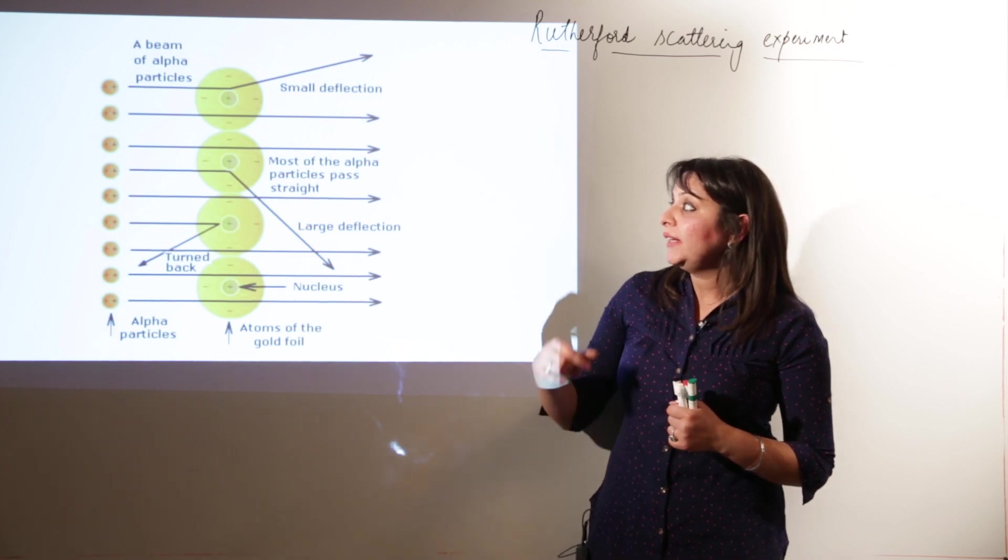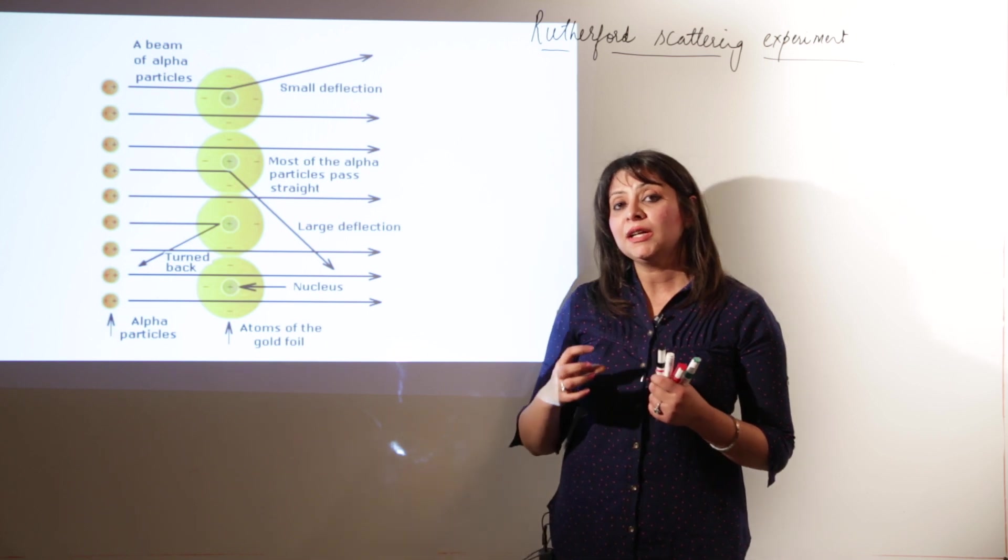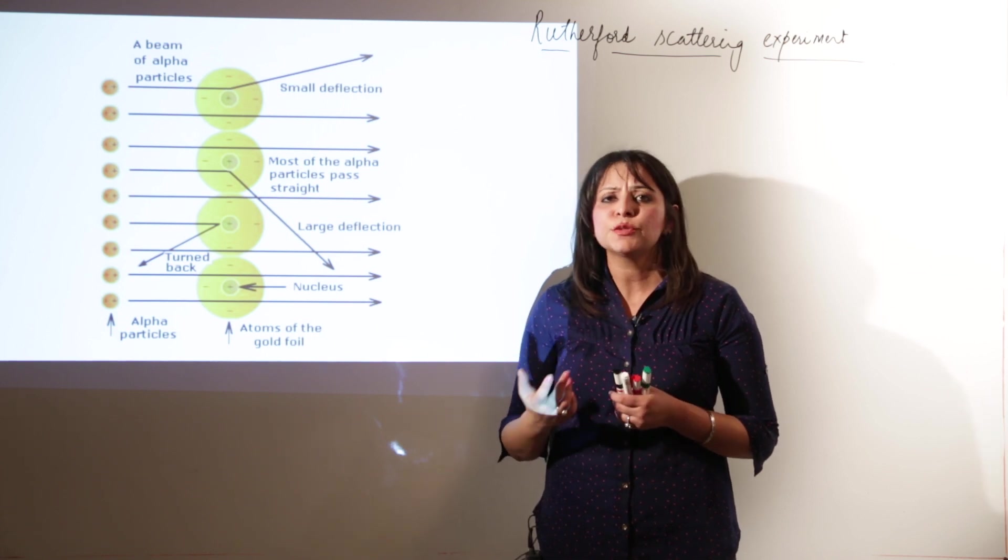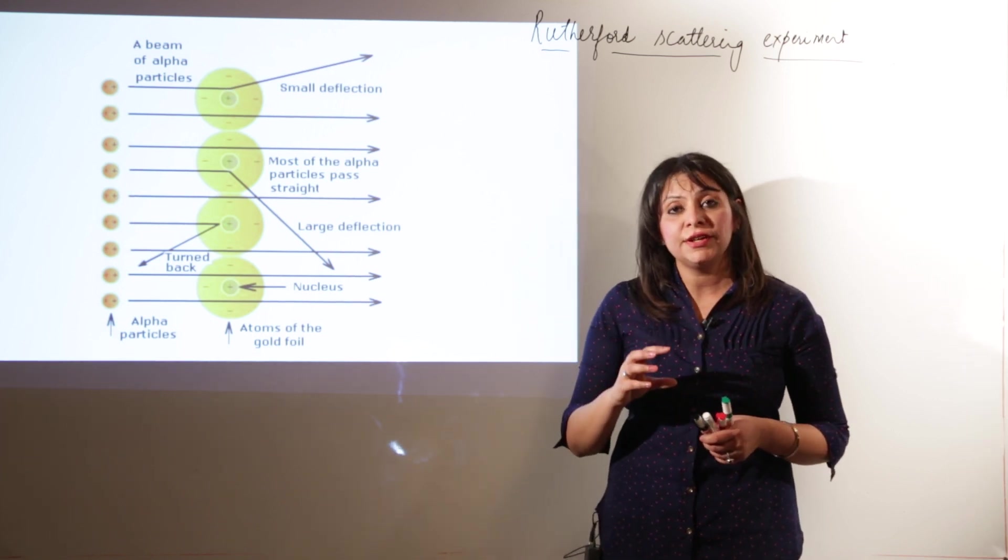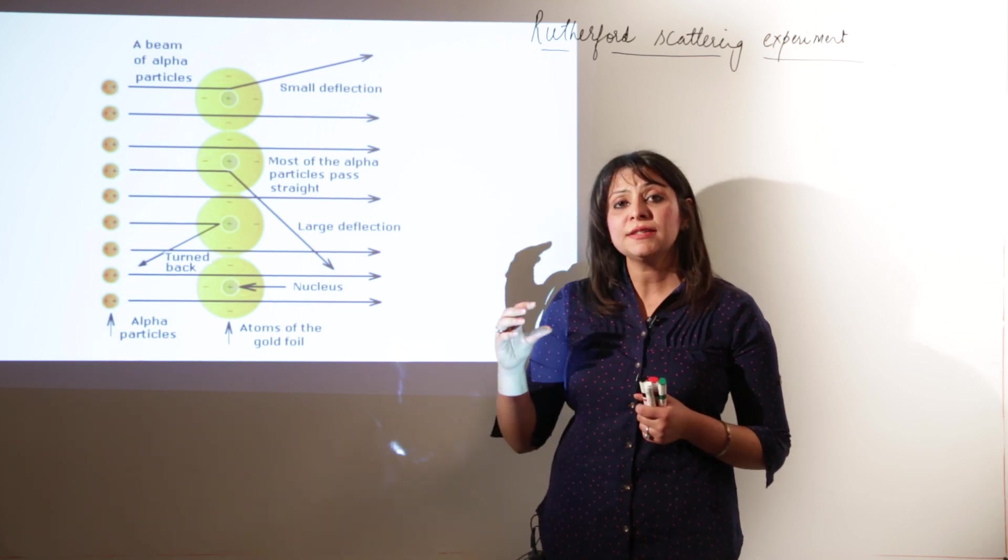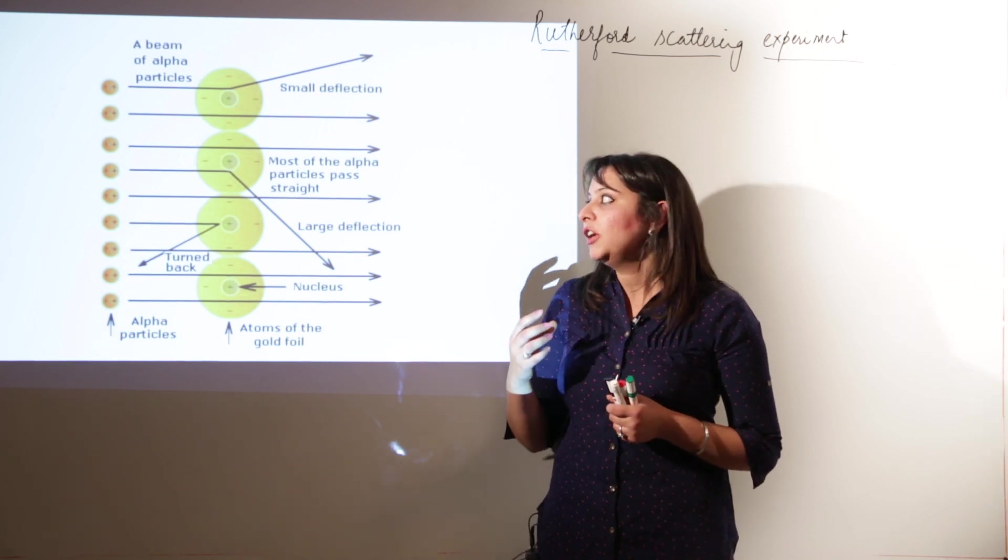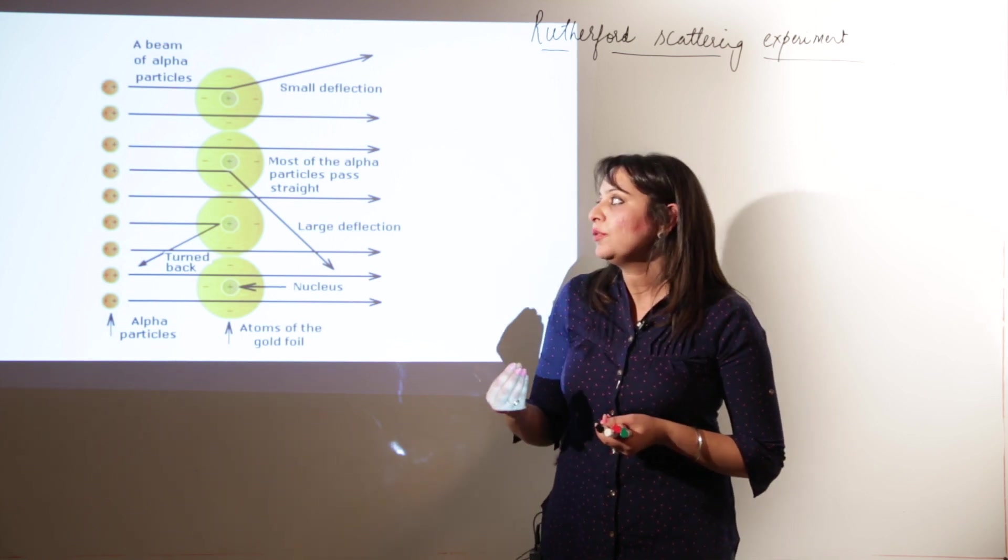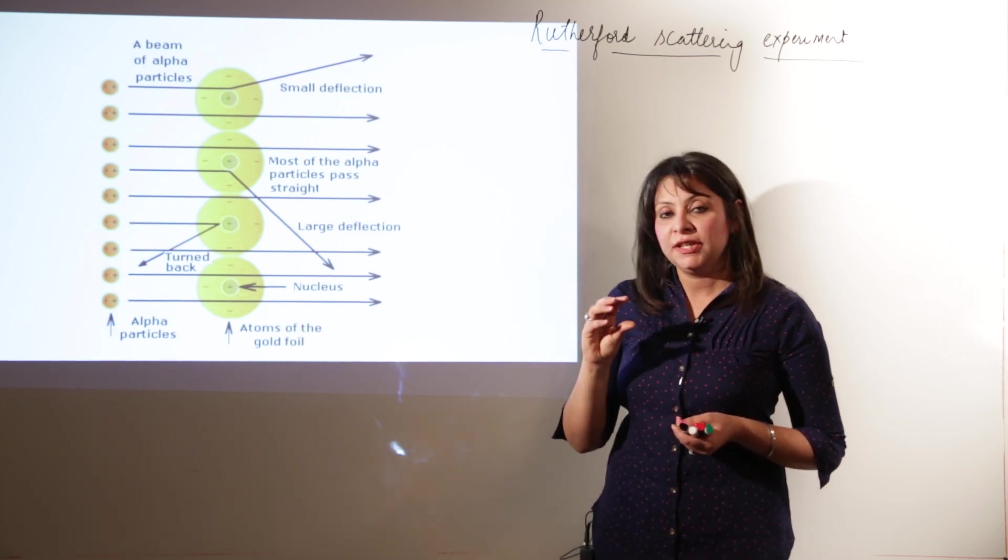And as he saw the deflections, small and large, that means the alpha particle actually encountered some dense body which leads to the deflection in them, whether the deflection is small or large. They hit some dense concentrated mass. Rutherford called that dense concentrated mass the nucleus. And he told that this nucleus might be present in the center because the deflections were very few. Moreover, out of 10,000 rays, only few rays got deflected. That means that mass is concentrated in a small area.